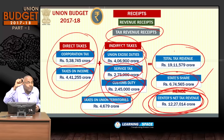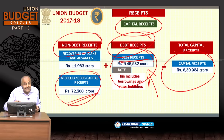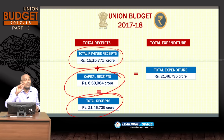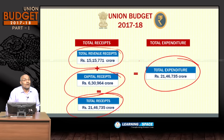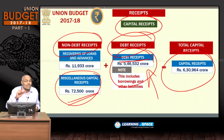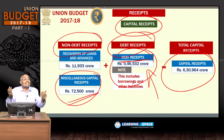To summarize receipts: tax revenue, non-tax revenue, non-debt capital receipts, and debt capital receipts together make total receipts of ₹21,46,000 crores, which equals total expenditure. The critical point is that ₹5,46,000 crores within total receipts represents borrowings and other liabilities — debt receipts — which is the fiscal deficit.